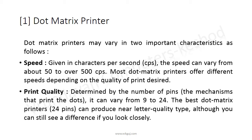The second characteristic is the number of pins, which can vary from 9 to 24. The best dot matrix printers with 24 pins can produce near letter-quality type, although you can still see a difference if you look closely.